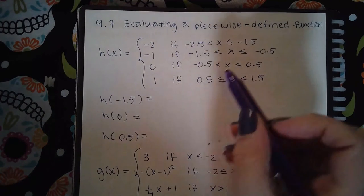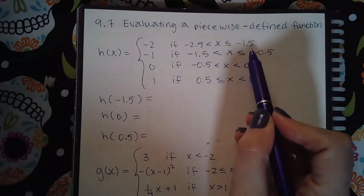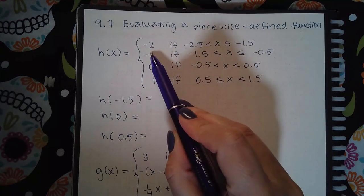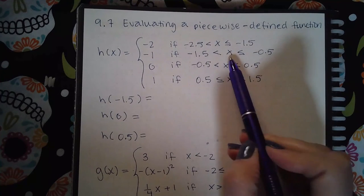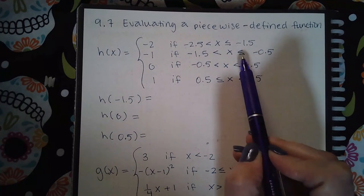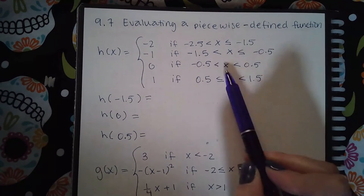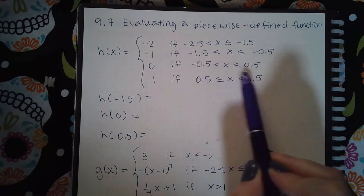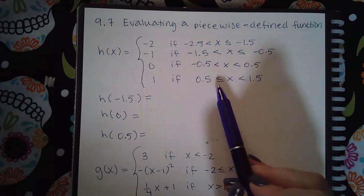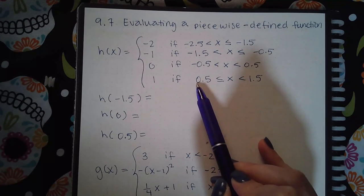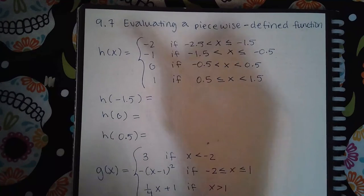If my x value is between these two or equal to this one, this is the y value I use. If my x is between these two values I use this as my y value, and if my x is between these two values or equal to this one, then this is the y value I will use.